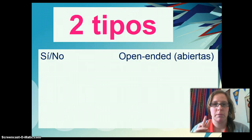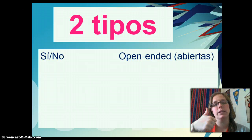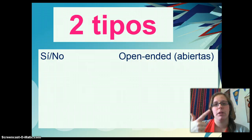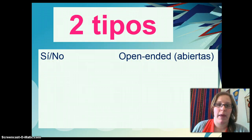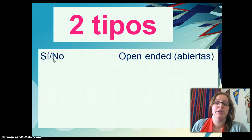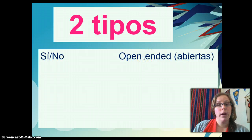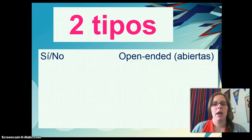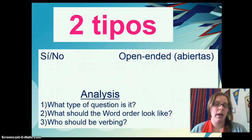First, we have dos tipos de preguntas. Our first tipo is sí o no. And the second tipo is preguntas abiertas, or open-ended questions. So what do we mean by that? An example of a yes or no question might be: did you do your homework? An example of an open-ended question would be: where did you do your homework? When did you do your homework? Why did you do your homework? These have some characteristics that we can use to identify. Those are the two main types of questions we're going to look at.